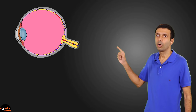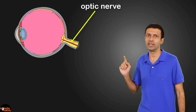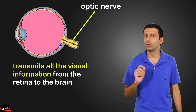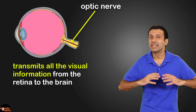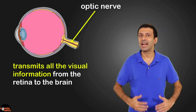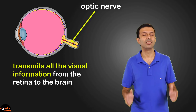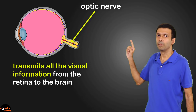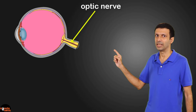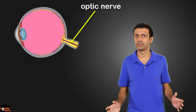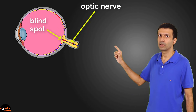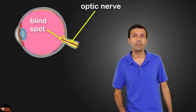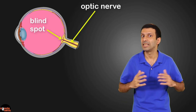There is a nerve called the optic nerve, which is attached to the retina. The optic nerve transmits all the visual information from the retina to the brain so that we can see the world around us — the eye acts like a camera and the brain gives us vision. Now at the point where the optic nerve meets the retina, there are no light-sensitive cells — no rods and cones. This is known as the blind spot, since no vision is possible at this point. If the image falls on the blind spot, we cannot see it.